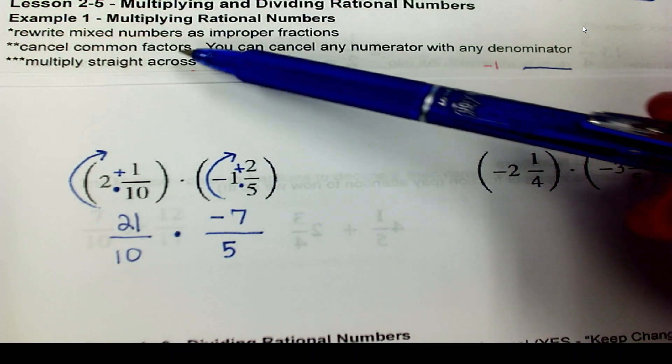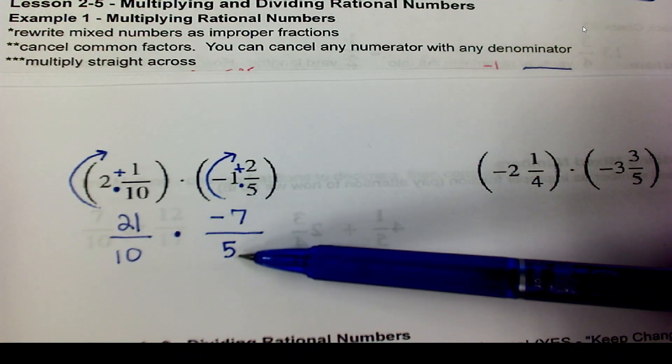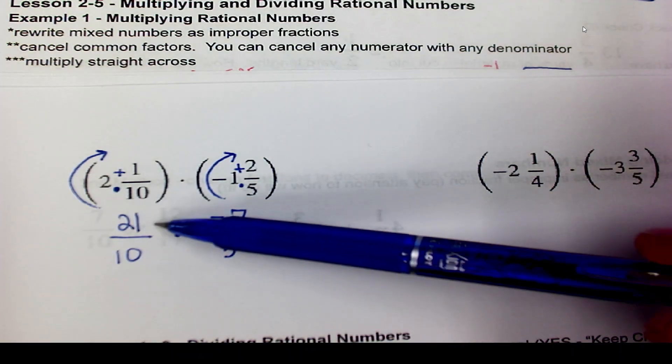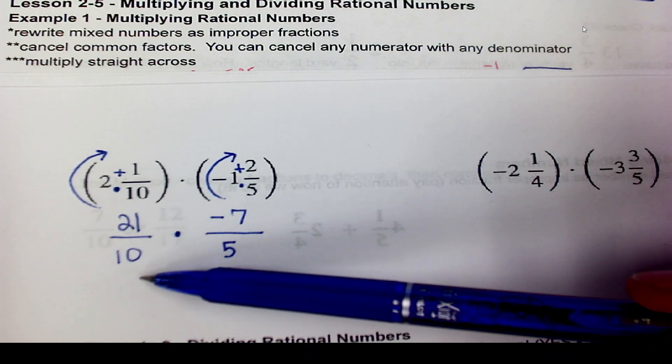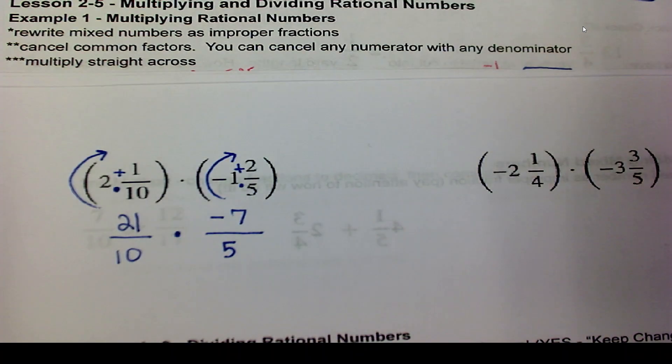Is there anything that we can simplify? Well, 21 and 10, no. The negative 7 and 5, no. What about the diagonals? 21 and 5, sadly, no. What about the 10 and the negative 7? No. This is one of the few times where there's nothing to simplify.